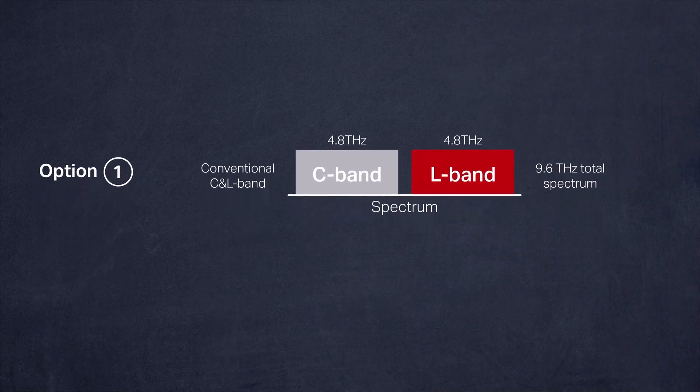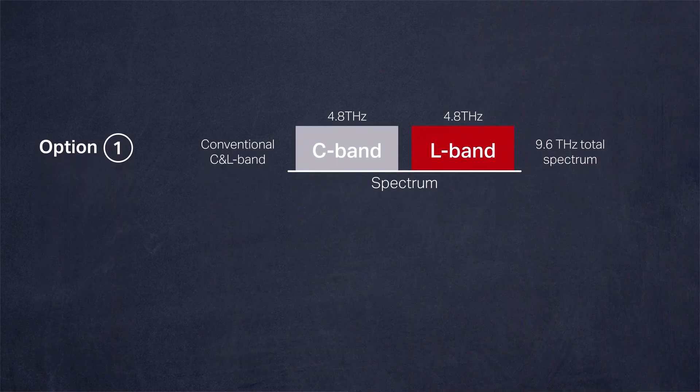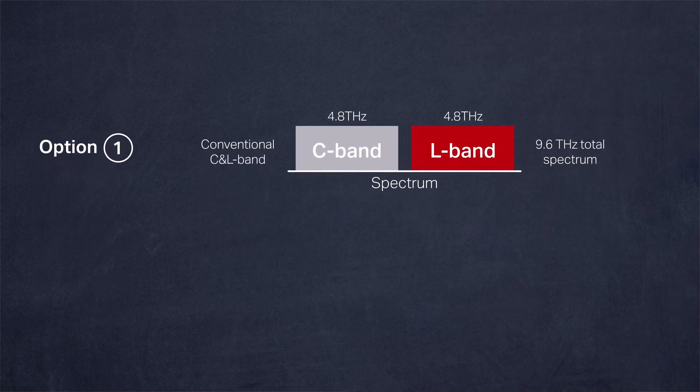First is the conventional C&L band. In this configuration, we have a 4.8 THz C band and a 4.8 THz L band, which together provides 9.6 THz of total spectrum.